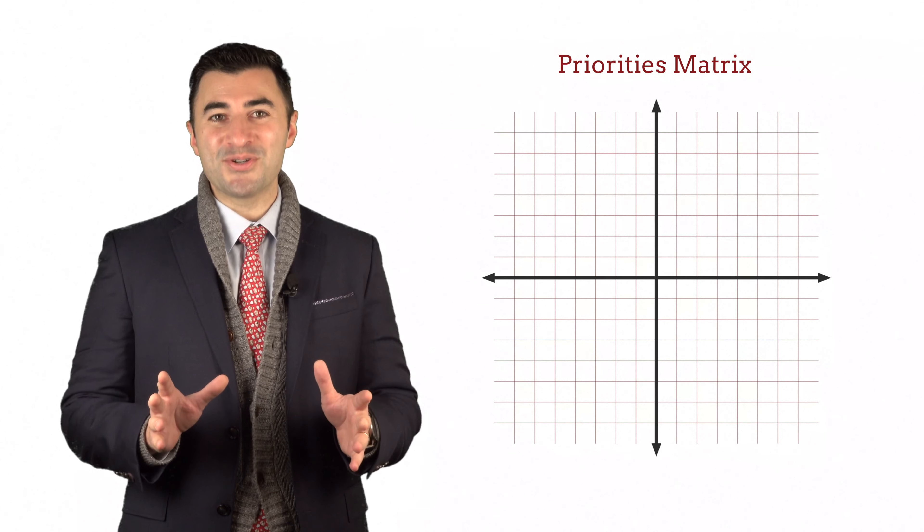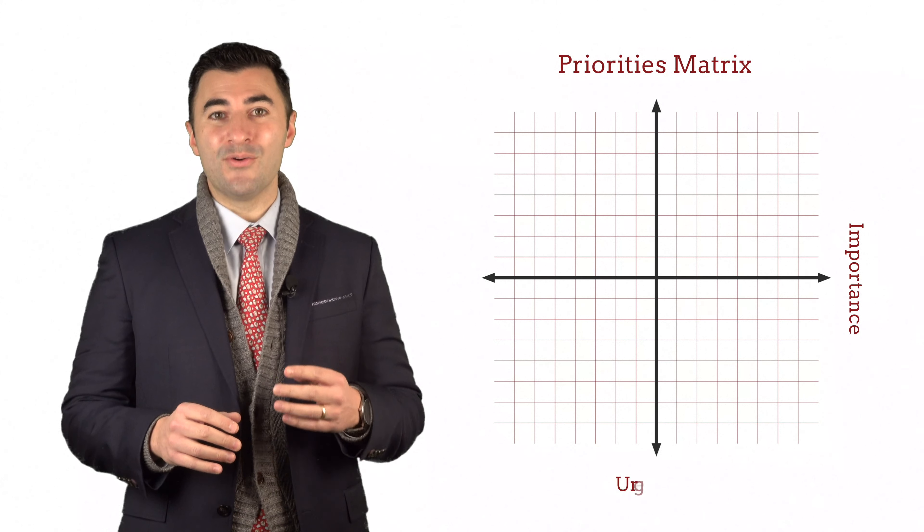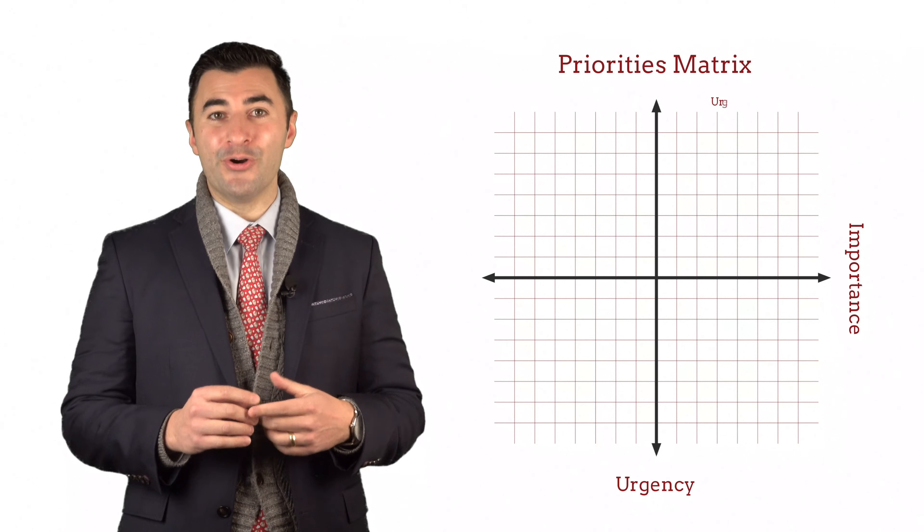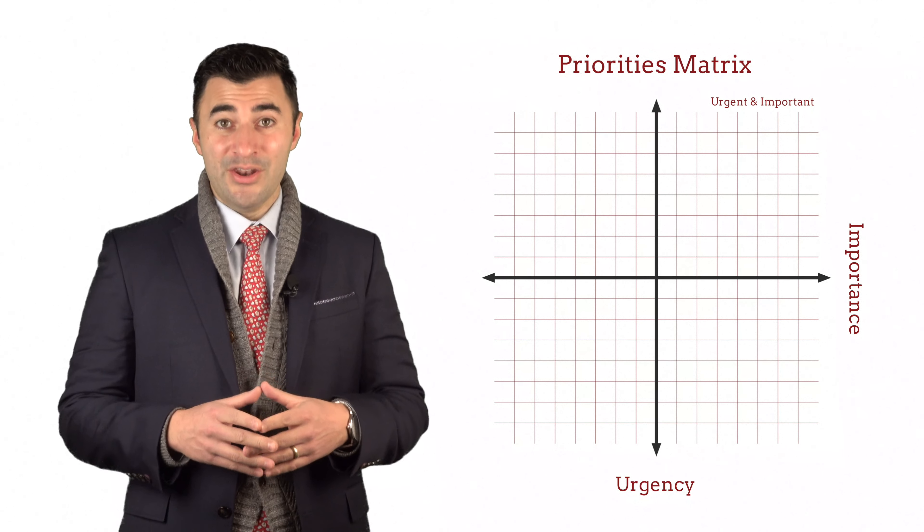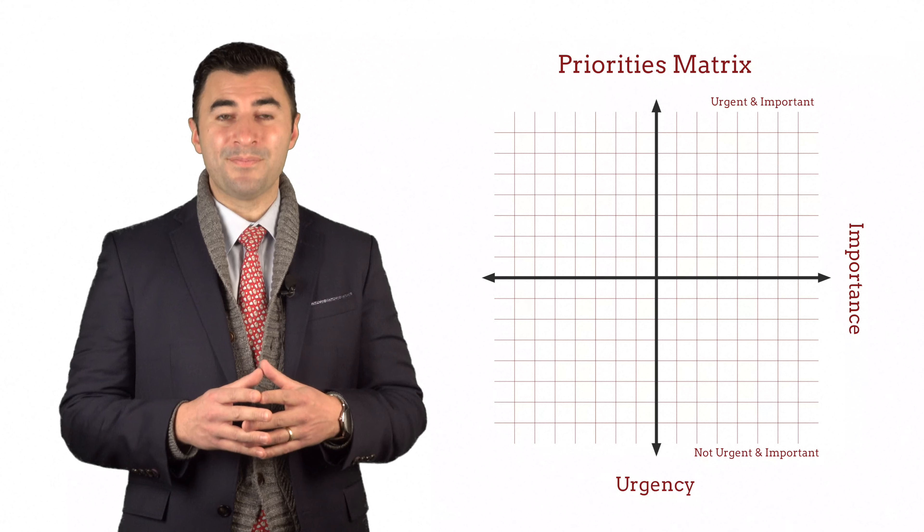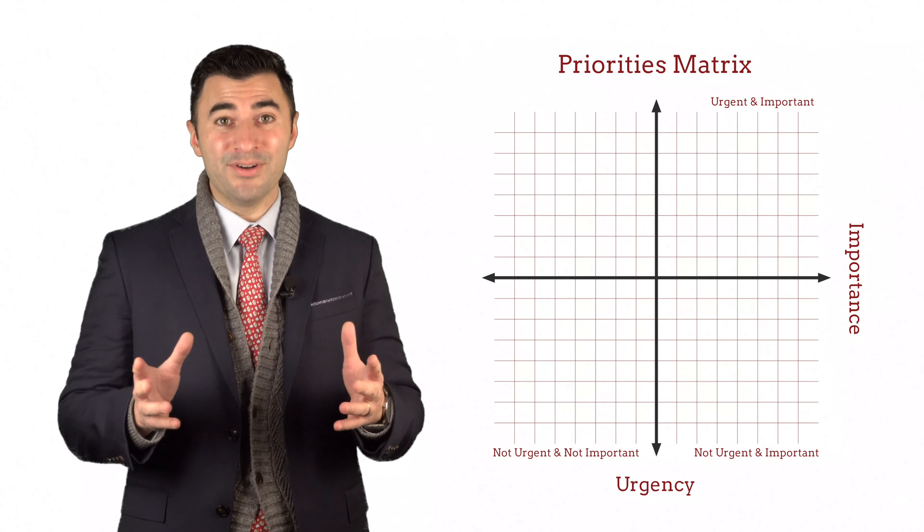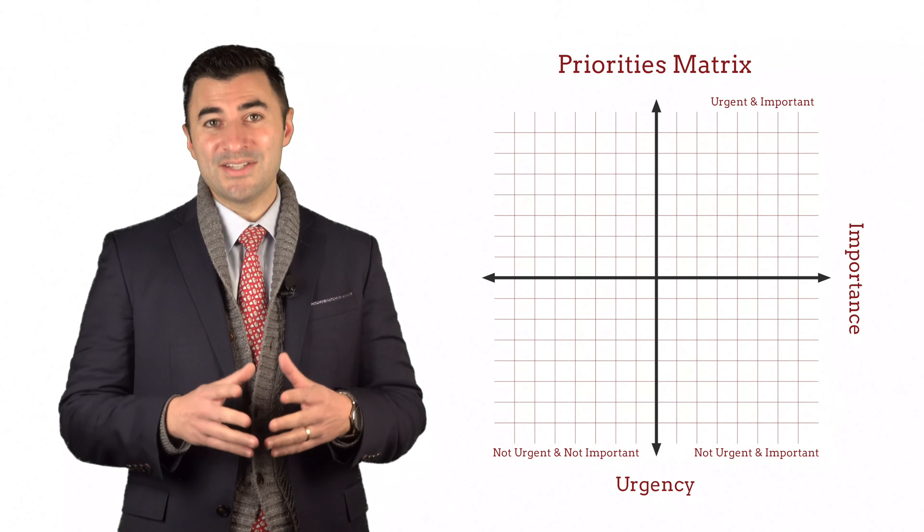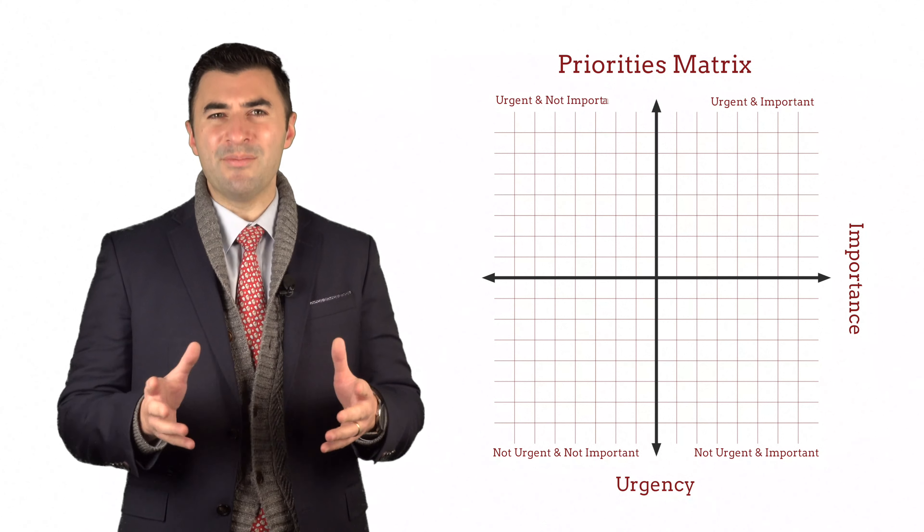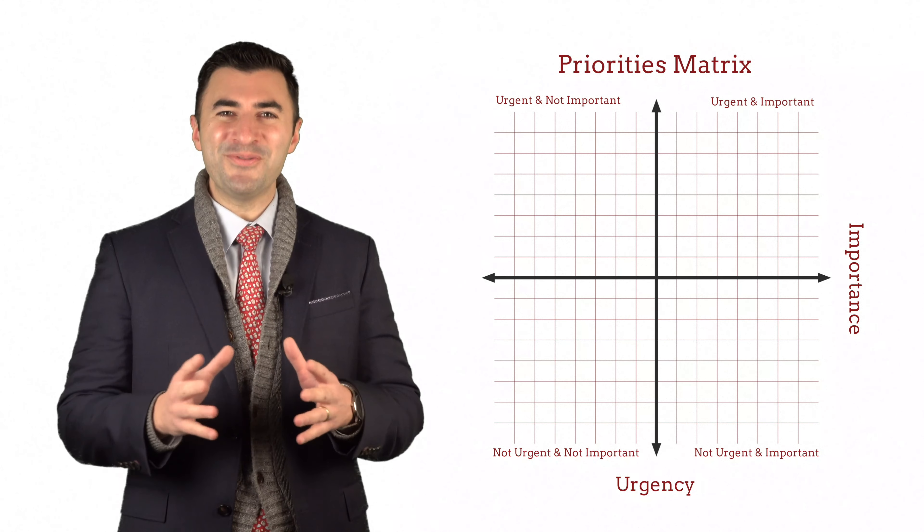A priorities matrix has four quadrants. One quadrant is labeled urgent and important. Another is labeled not urgent but important. A third is labeled not urgent and not important. And the last one is labeled urgent but not important.